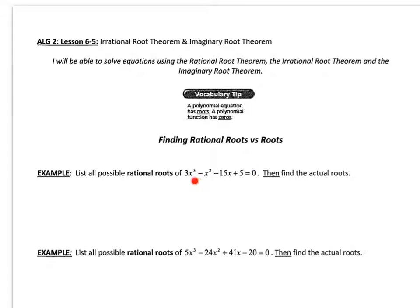So this equation only has one variable, whereas a function will have two variables, an x and a y, or an x and a f of x. The first theorem is called the rational root theorem.